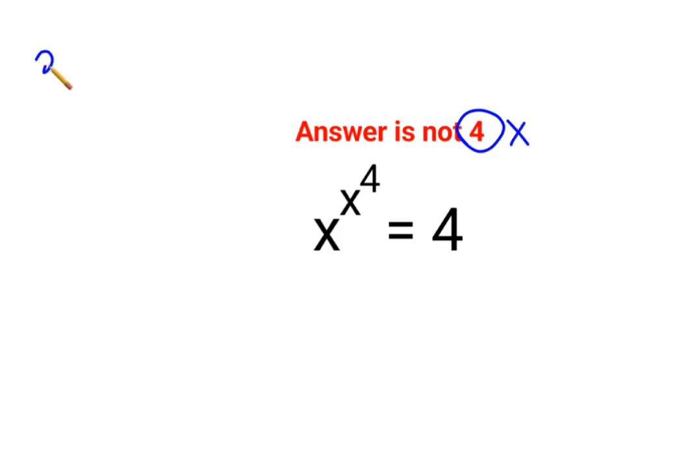See, we have x raised to x raised to 4 equals 4. Okay. So at this point, what we can do is we can write this x raised to x raised to 4. I can even write this as taking the 4th power on both sides.